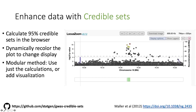LocusZoom has all the interactive features here. You can change how you want it to display. When you pan and zoom, the credible set calculation will happen instantly for the region you're looking at and then color appropriately. An important point was to make this method modular. The library we developed for doing this can be plugged into LocusZoom to show these things in the plot, but you could also separately take that functionality and use it in other places.